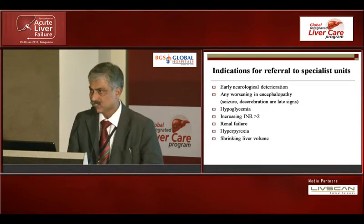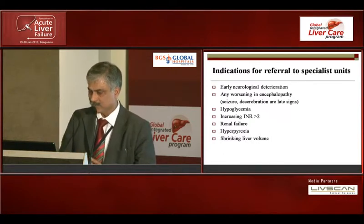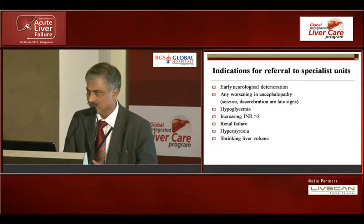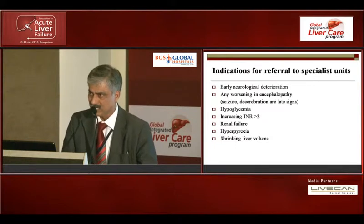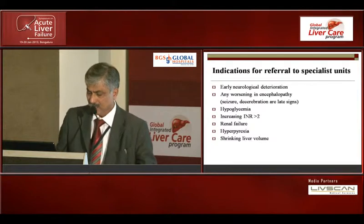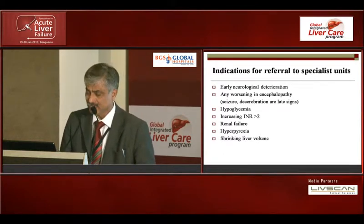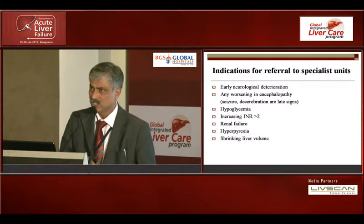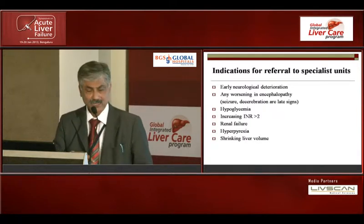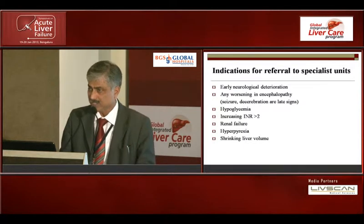Key pointers for referral to a specialist unit: first, early neurological dysfunction — any worsening encephalopathy from grade one or two to grade three warrants immediate referral, because waiting risks seizures and decerebration. Metabolic dysfunction with recurrent hypoglycemia, INR rising above two (monitor three- to six-hourly), renal dysfunction, hyperparexia, and clinically obliterated liver dullness are all signs requiring urgent action. These patients will only become sicker.